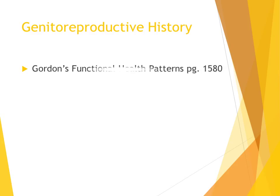On page 1580 of your Iggy book, you will find Gordon's Functional Health Patterns. Chart 72-2 provides examples of questions to ask the patient when performing the genitoreproductive history.